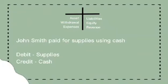John Smith paid for supplies using cash. Kaya ang supplies ay debit, dahil pumasok ito sa atin at nag-ingres ang ating asset, at ang cash naman ay credit, dahil tayo ay nagbayad — it means ito ay lumabas.